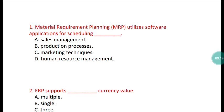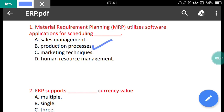Question 1: Material Requirement Planning (MRP). MRP utilizes a software application for scheduling what? The options are: sales management, production process, marketing techniques, and human resource management. The correct answer is option B — to schedule the production process.